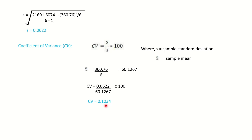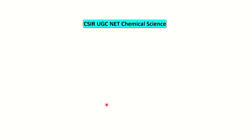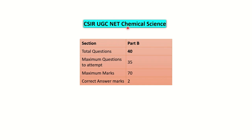In this way we have solved the second problem, and this is how you can solve all three types when questions come on this topic. Now we will look at some questions from the CSIR UGC NET chemical science. In Part B of CSIR UGC NET, there are 40 total questions and you have to attempt 35, carrying 70 marks — that is two marks per question with negative marking.